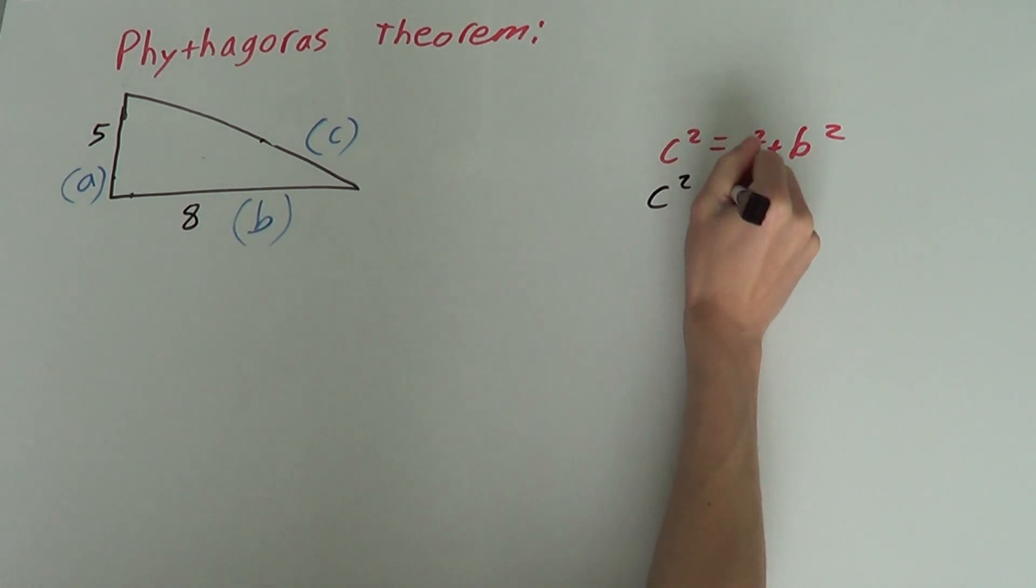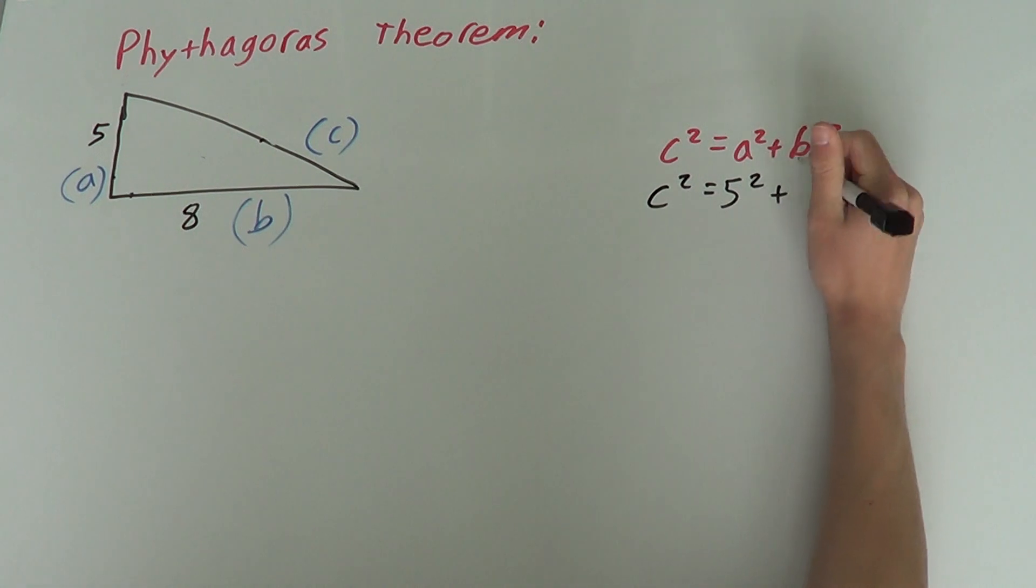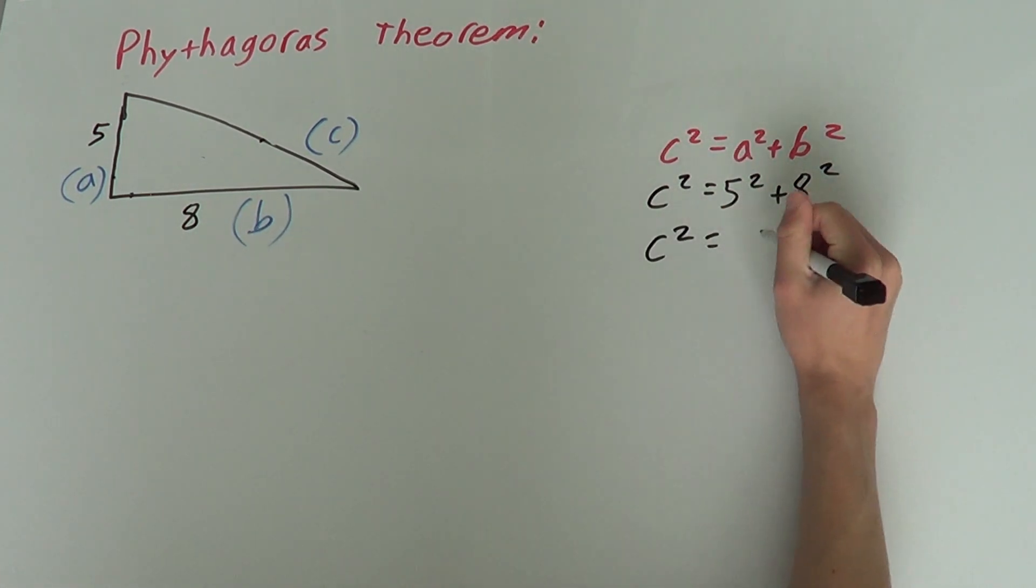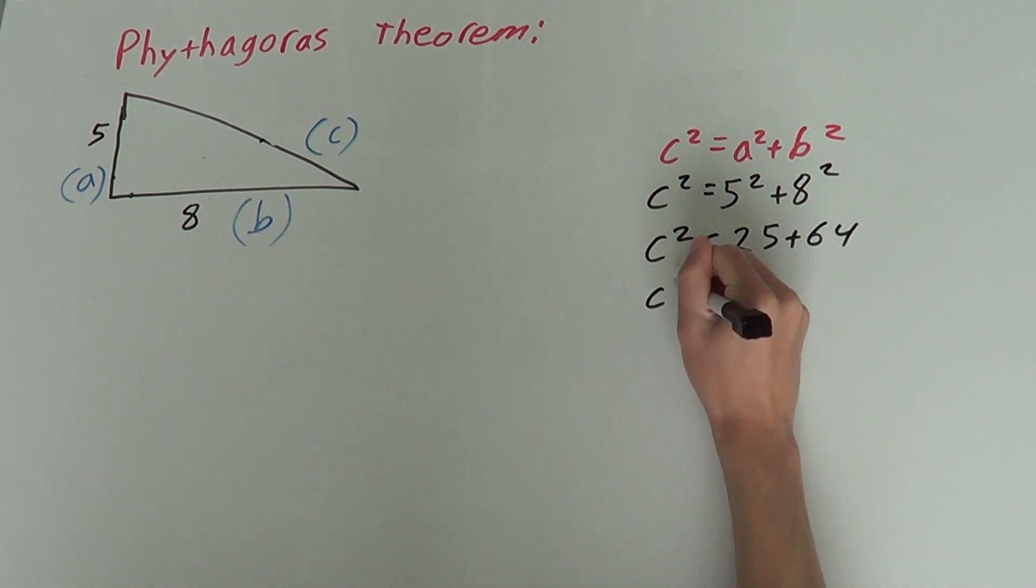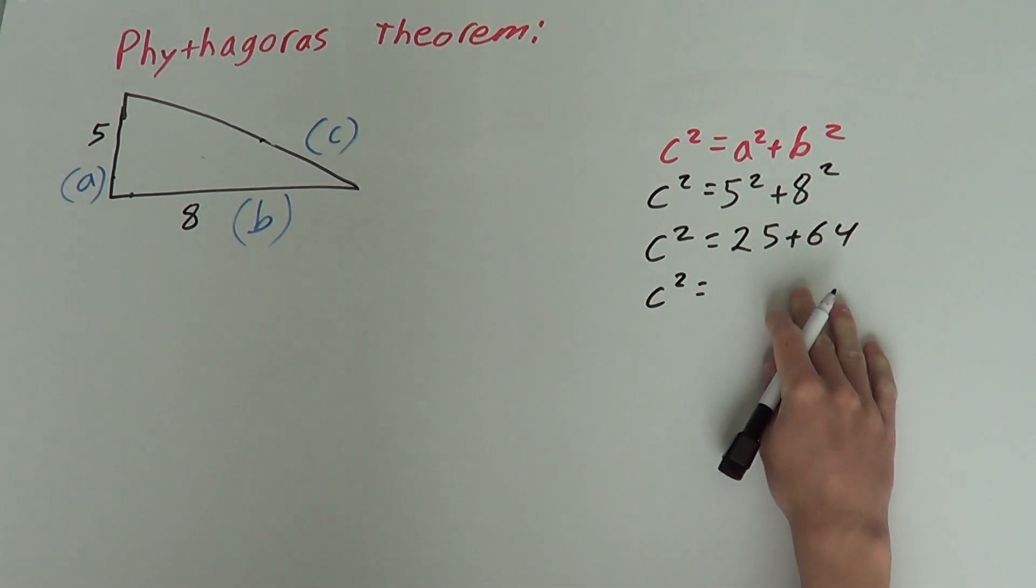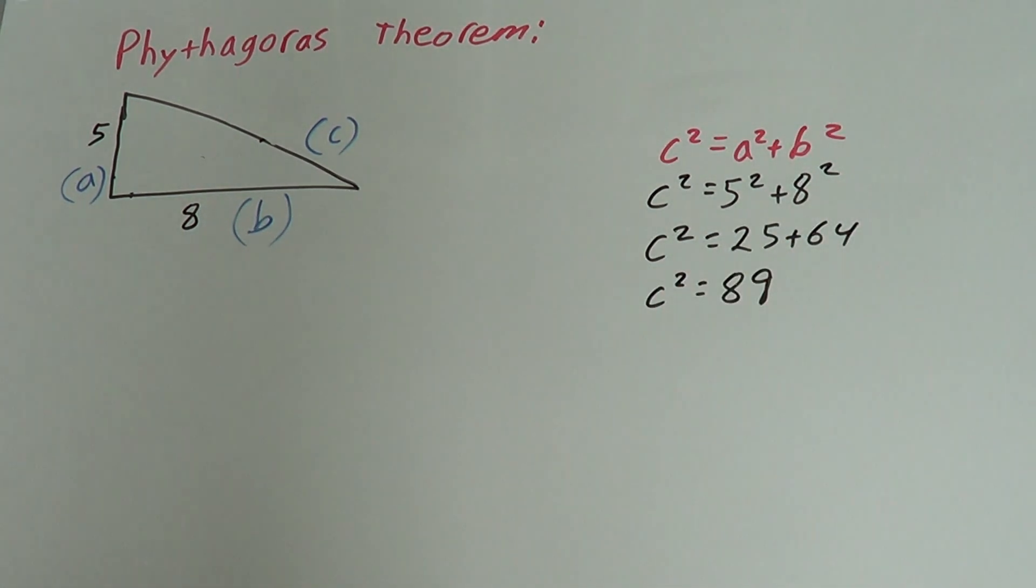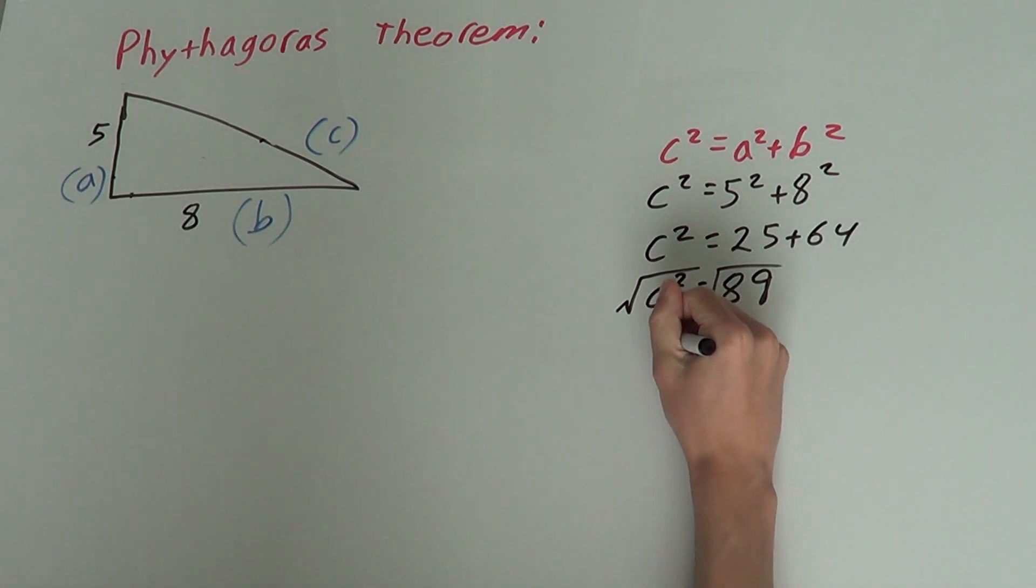So, c squared equals a, which is five, so five squared plus b, which is eight, so eight squared. C squared equals twenty-five plus sixty-four. C squared equals eighty-nine. So, now we take the square root of both sides to get c by itself.